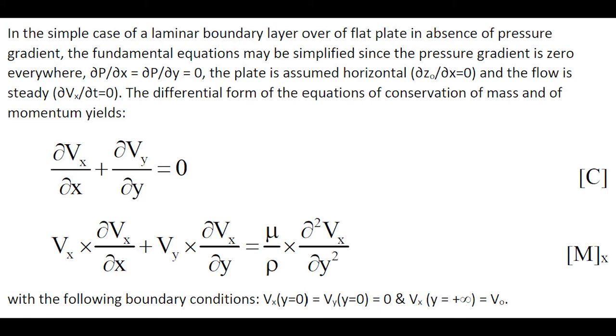In the simple case of a laminar boundary layer over a flat plate in absence of pressure gradient, the fundamental equations may be simplified since the pressure gradient is zero everywhere, the plate is assumed horizontal, and the flow is steady.